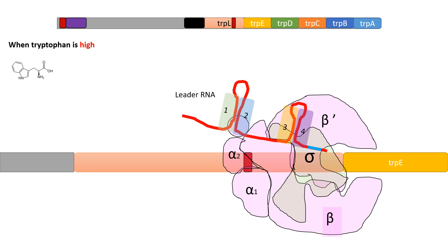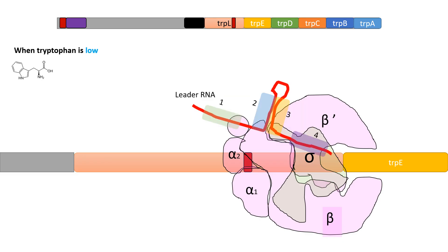When tryptophan levels are high, the attenuator stem loop is formed — meaning regions 1-2 and 3-4 pair together. In this situation, there is a small sequence rich in uracil, which increases the chance that RNA polymerase will fall off and not transcribe the trpE to trpA genes.